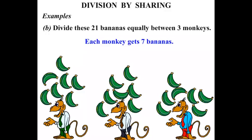So we had 21 bananas. We split it up 3 ways between 3 monkeys there. So we say that 21 divided by 3. The answer was 7.